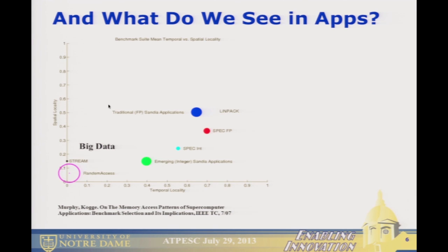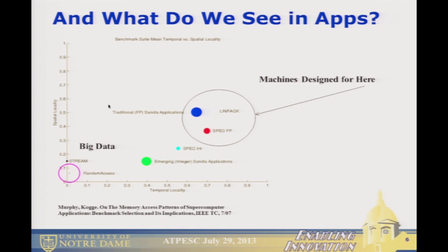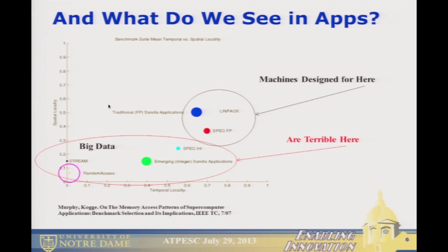Looking at applications: the bottom axis is temporal locality — reuse of the same data — and the other axis is spatial locality, how often you use data close to data you just used. Cache-based machines are very nice when your applications fit in the high-locality regime, but we have more and more applications for which that doesn't fit. That includes high-performance scientific code like CTH, used in shock physics, which has a ton of table lookups before you even do a floating-point operation. We're moving rapidly into a regime where cache-based architectures don't do a terribly good job.